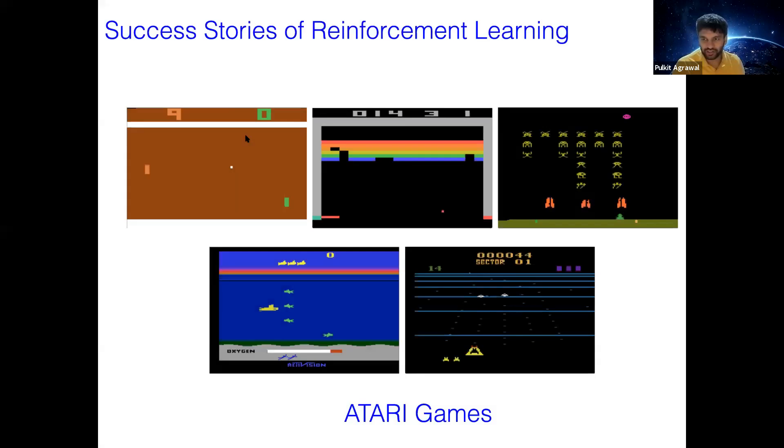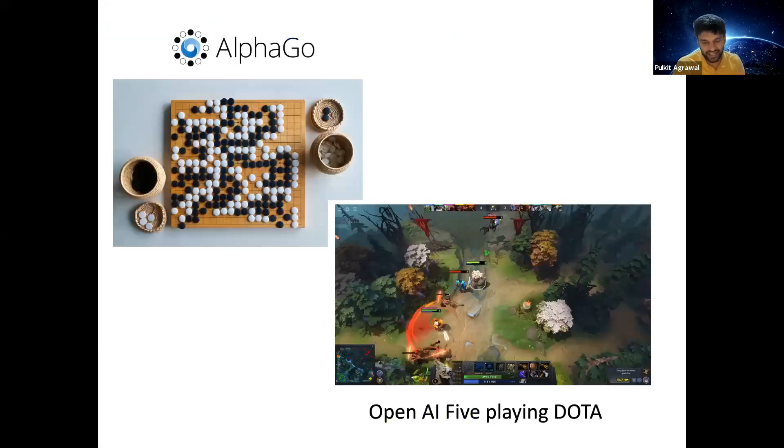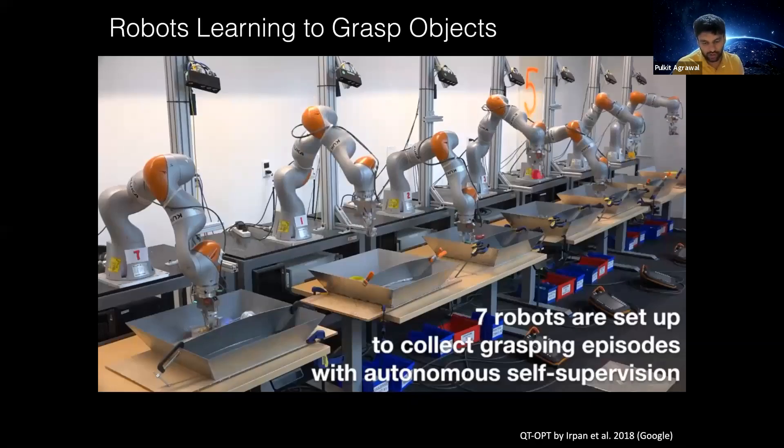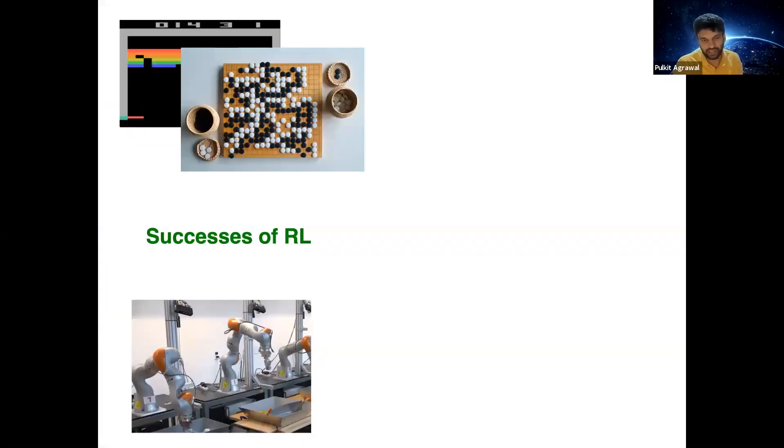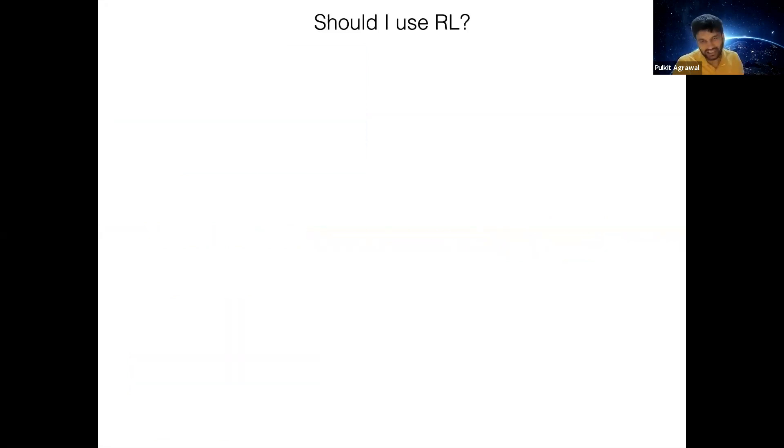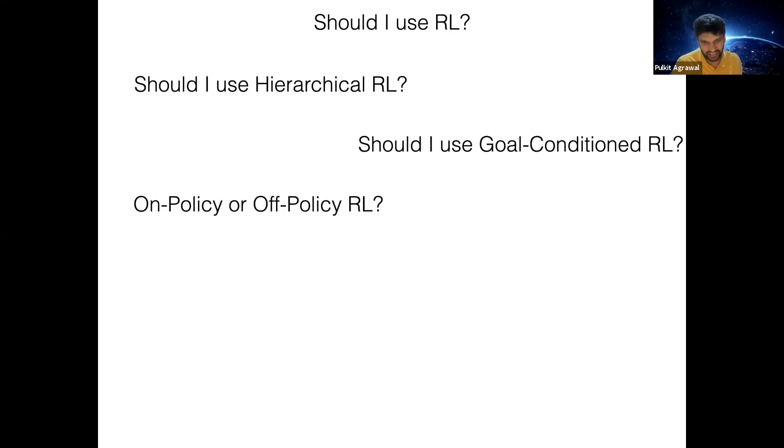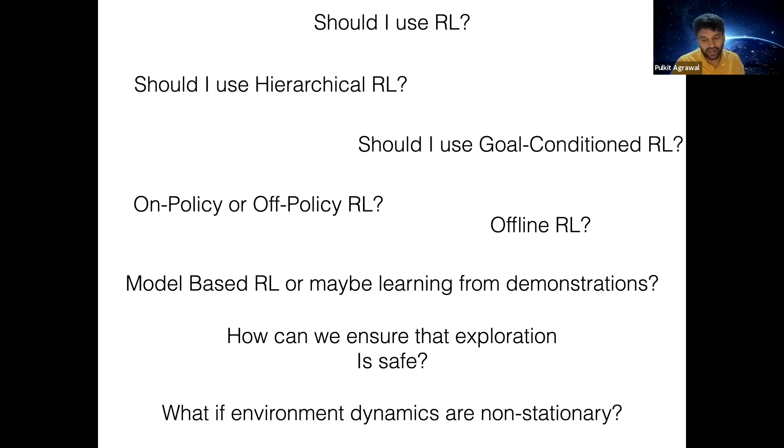There are many success stories of reinforcement learning in many games, but also in real world control applications. But the question that we would like to ask is, okay, these successes have come in reinforcement learning, but how do we get success on new problems? If I have a new problem, the question might be, should I use RL? Maybe should I use a variant, which is hierarchical RL? Should I use goal conditioned RL, should it be on policy or off policy, should it be offline RL? Should I be learning models or maybe learning from demonstrations? How can we ensure the exploration is safe? What if the environment dynamics are non-stationary?